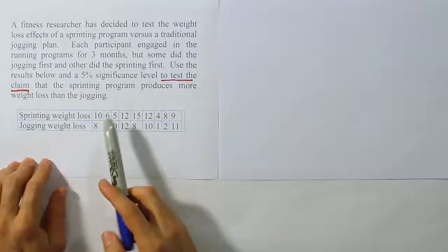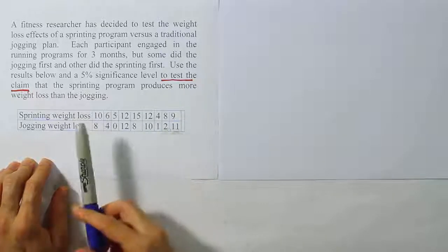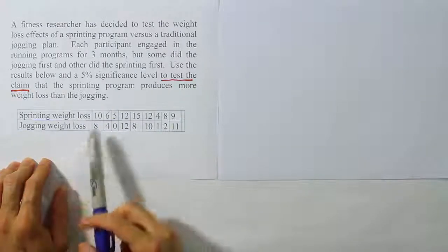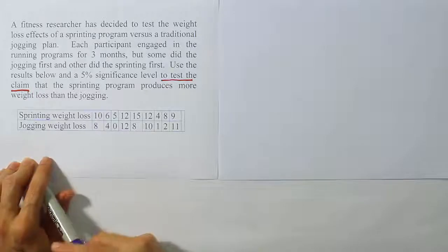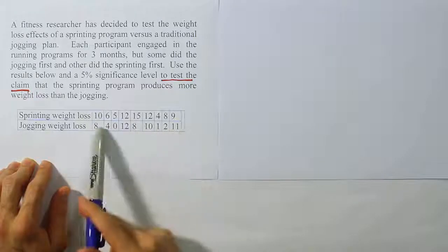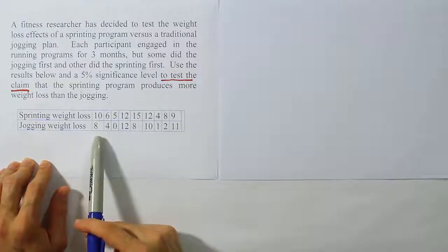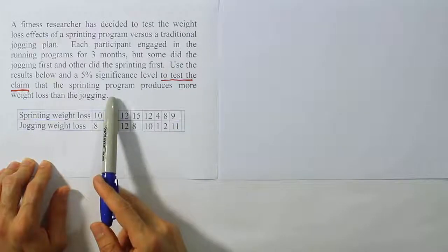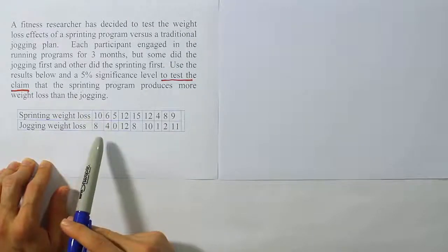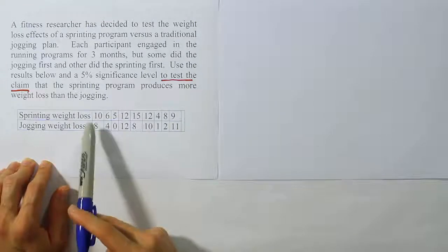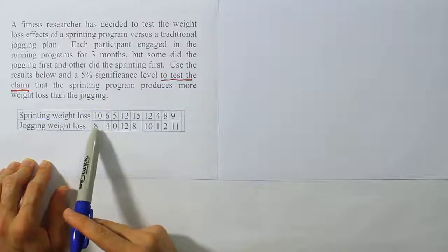When I look at the data I see there's two groups of data here and it looks like the data is set up in a dependent t-test fashion. It's t-test because the sample size is small and I say it's dependent because if you read the problem carefully it looks like the runners, each of them did a sprinting program and a jogging program. So every subject did both programs.